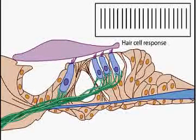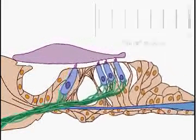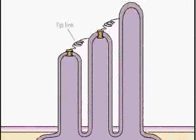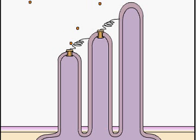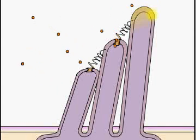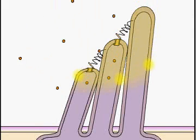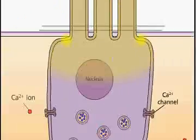The fine filamentous structures known as tip links run parallel to the plane of bilateral symmetry, connecting the tips of adjacent stereocilia. The tip links provide the means for rapidly transmitting hair bundle movement into a receptor potential. When the hair bundle is deflected towards the tallest stereocilia, cation-selective channels open near the tips of the stereocilia, causing an influx of potassium ions and rapid depolarization of the entire hair cell.